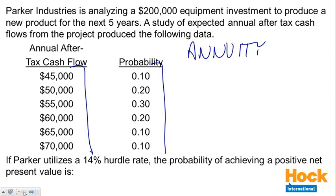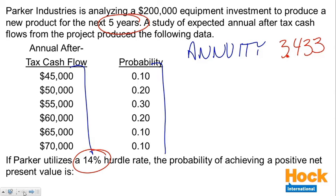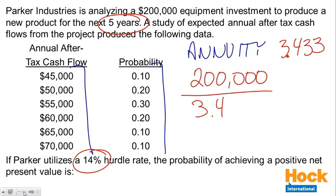What is the constant cash flow each year over this five-year time interval? We're looking at an annuity for five years at 14%. We go to the present value of an annuity table, look at the five-year, 14% column and row, and we get 3.433 as the table value. So we're going to take that $200,000 and divide it by 3.433 to get the annual cash flow needed for the company to have a positive net present value.